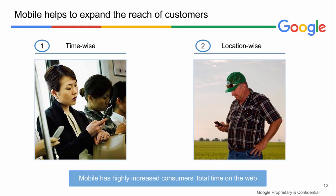Now let's analyze the advantages and benefits of going mobile. Here at Google, we say 'winning the micro moments that matter': the I want to know moment, I want to do moment, I want to go moment, and I want to buy moment. You or your clients have to be there at that micro moment when a potential customer is looking for you. Many people search on the go — when they are on the bus, waiting in a queue, or even watching TV. Being present on mobile increases your chances to win the customer.